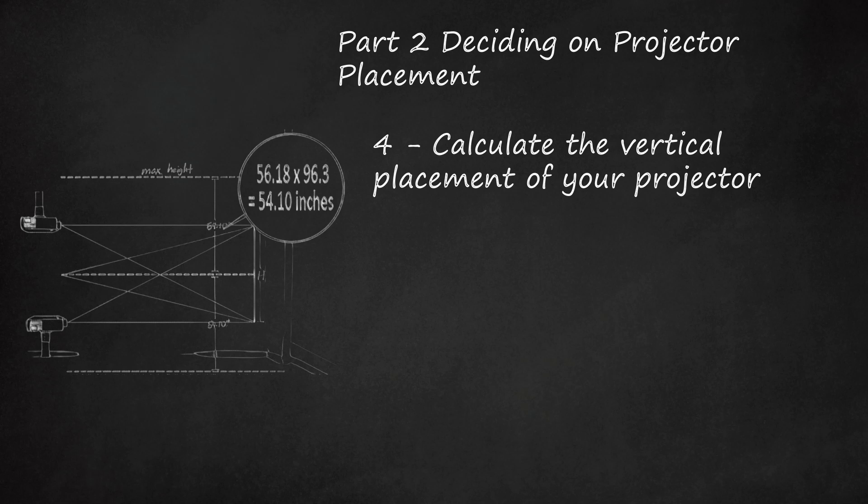The following example is for a projector with a -96.3% to +96.3% offset. A standard high-definition projection screen will have a 1.78:1 (16:9) aspect ratio, meaning that the screen will be 1.78 times as wide as it is high. If your screen is 100 inches (8.33 feet) wide, it will likely be 56.18 inches (4.68 feet) high.